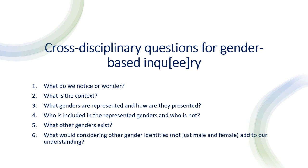The third question: what genders are represented and how are they presented? Fourthly, who is included in the represented genders and who is not? What other genders exist? These questions allow students to consider representation in the text and prompt them to think outside the binary — agender, transgender, non-binary, gender fluid, etc. The final question: what will considering other gender identities, not just male and female, add to our understanding? This may prompt students to make connections between the text and the world they live in, and can open doors to discussions on a broad number of real-world issues.